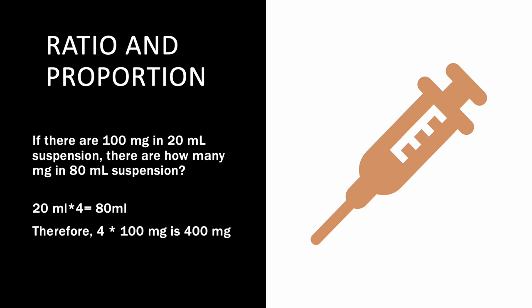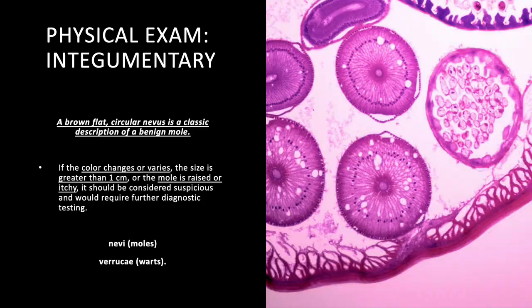For ratio and proportion: if you have a 20 mL suspension and need 80 mL, that's 4 times the original. So multiply both sides by 4: if the original dose contains 100 mg, then 100 mg × 4 = 400 mg is the answer.